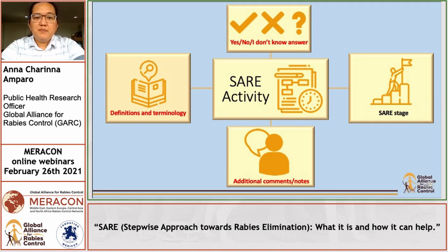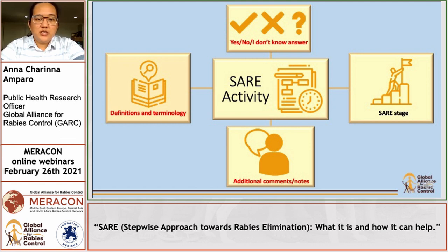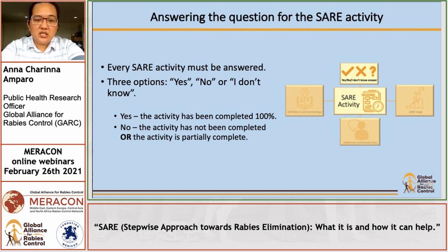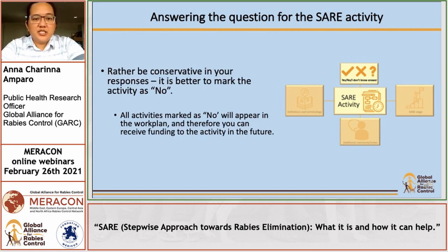There are four main details you will encounter when completing the SARA assessment. First are the questions answerable by yes or no, definitions and terminology, some comments or notes, and the SARA stage. It's very important that each activity has been answered by yes, no, or I don't know. We define yes as the activity having been completed 100%, and no means the activity has not been completed or is partially complete. It is better to be conservative in your responses — it's better to mark the activity as no, because partially completed activities marked as no will appear in the work plan and therefore will be earmarked for funding in the future.